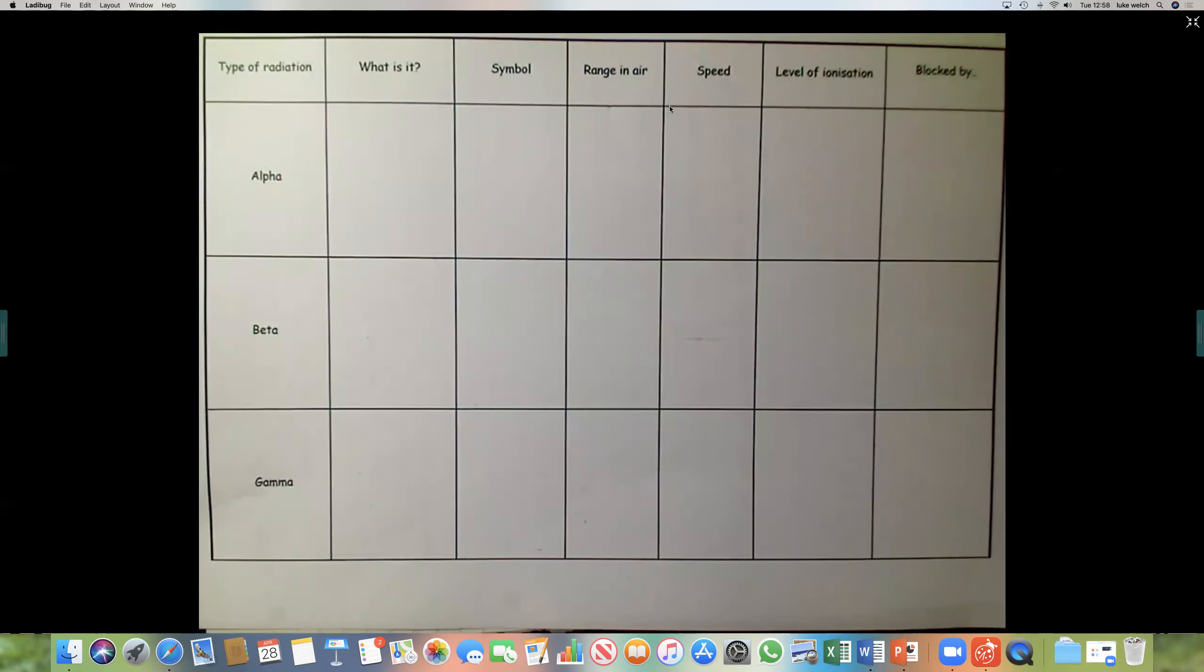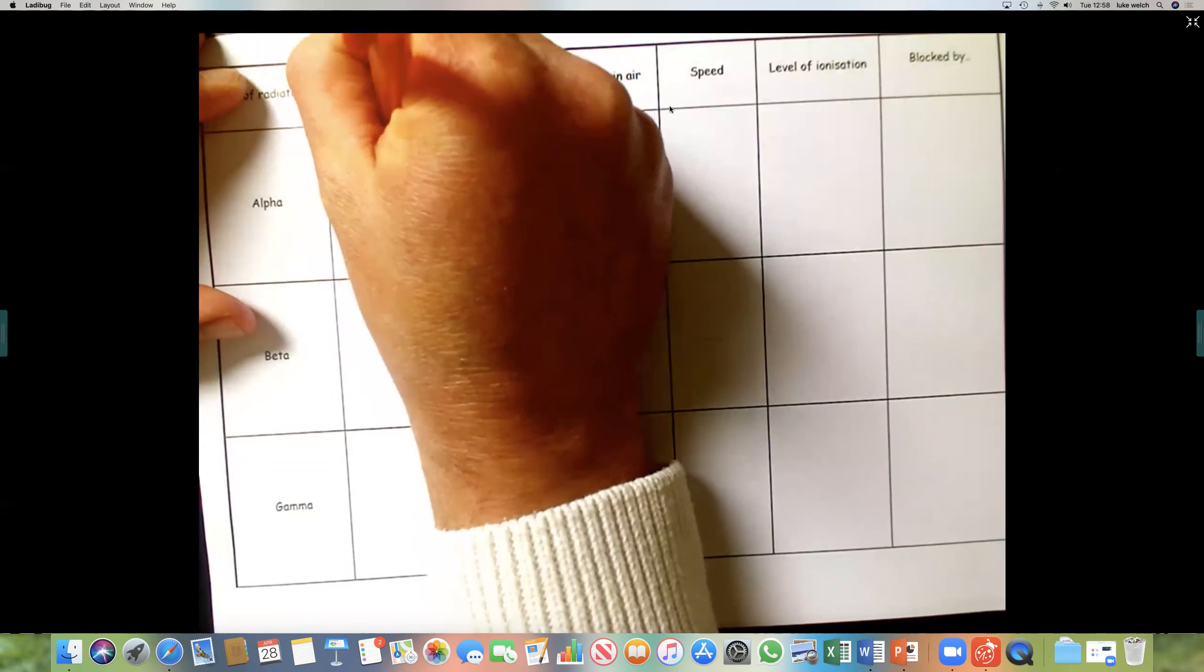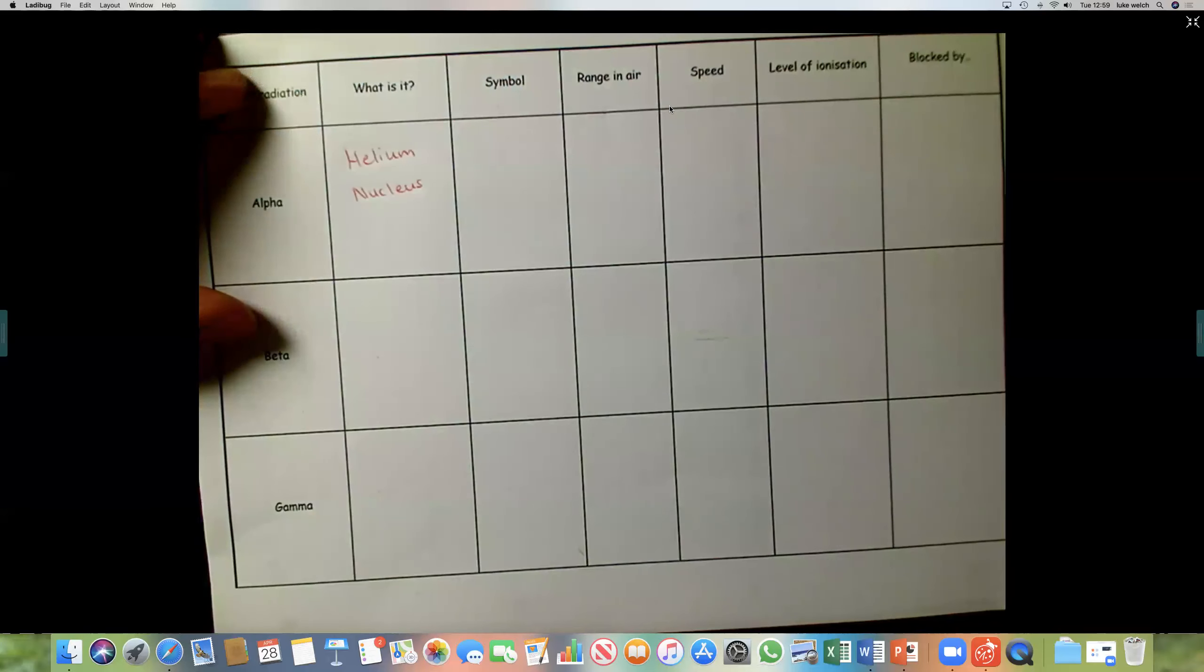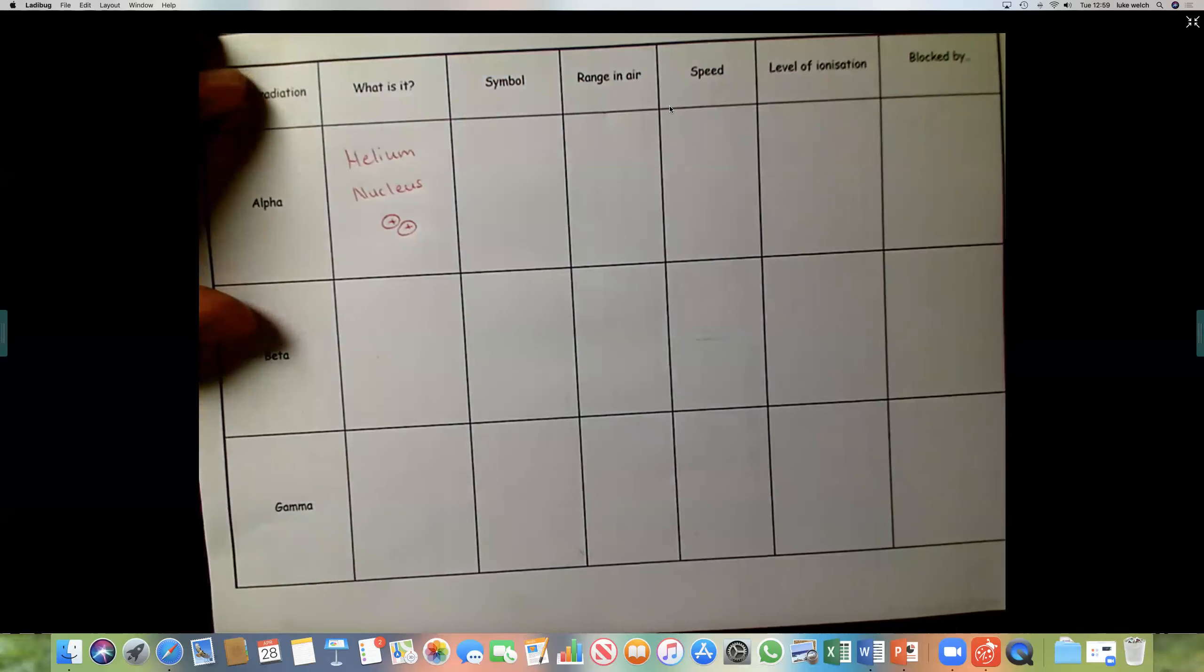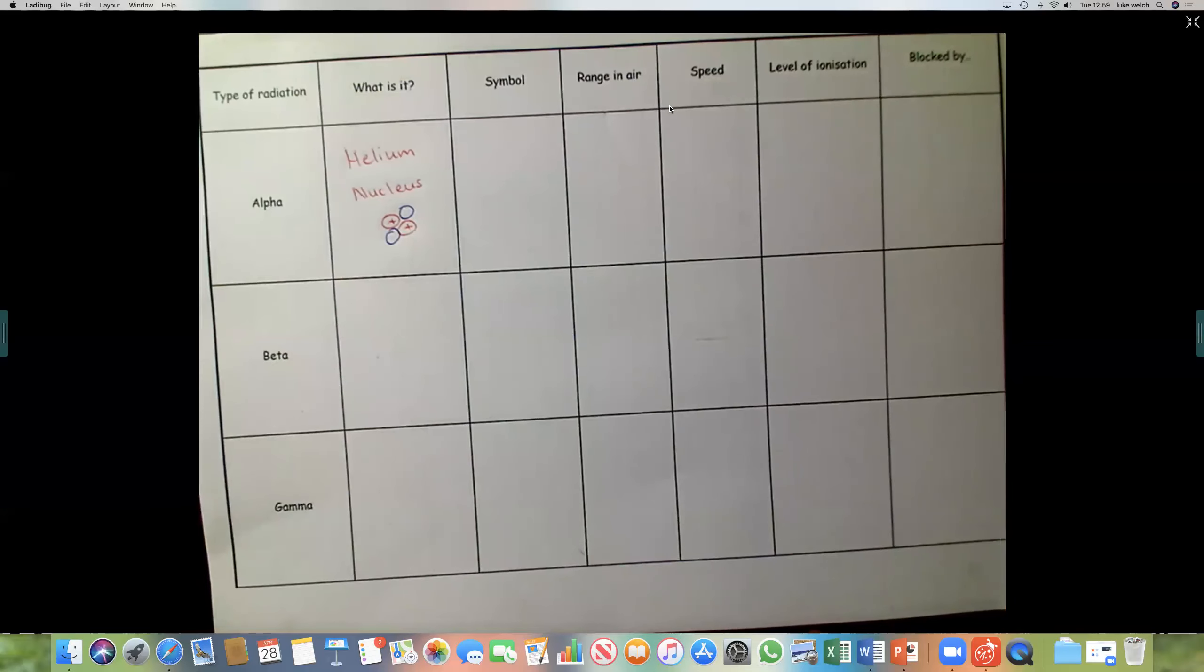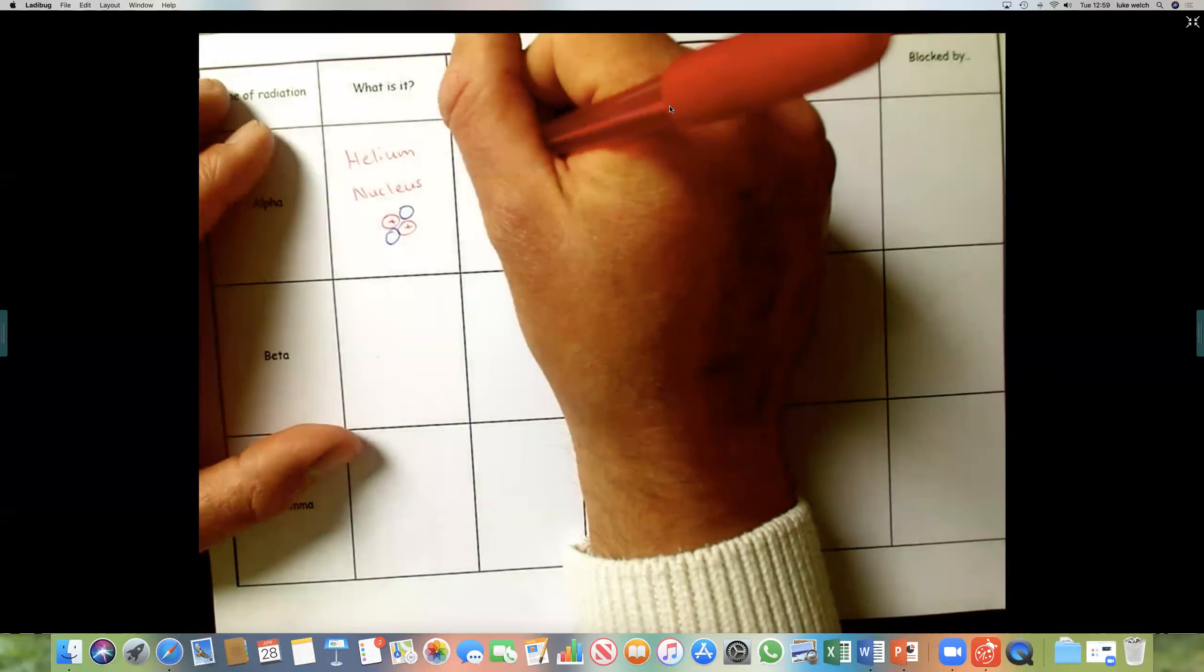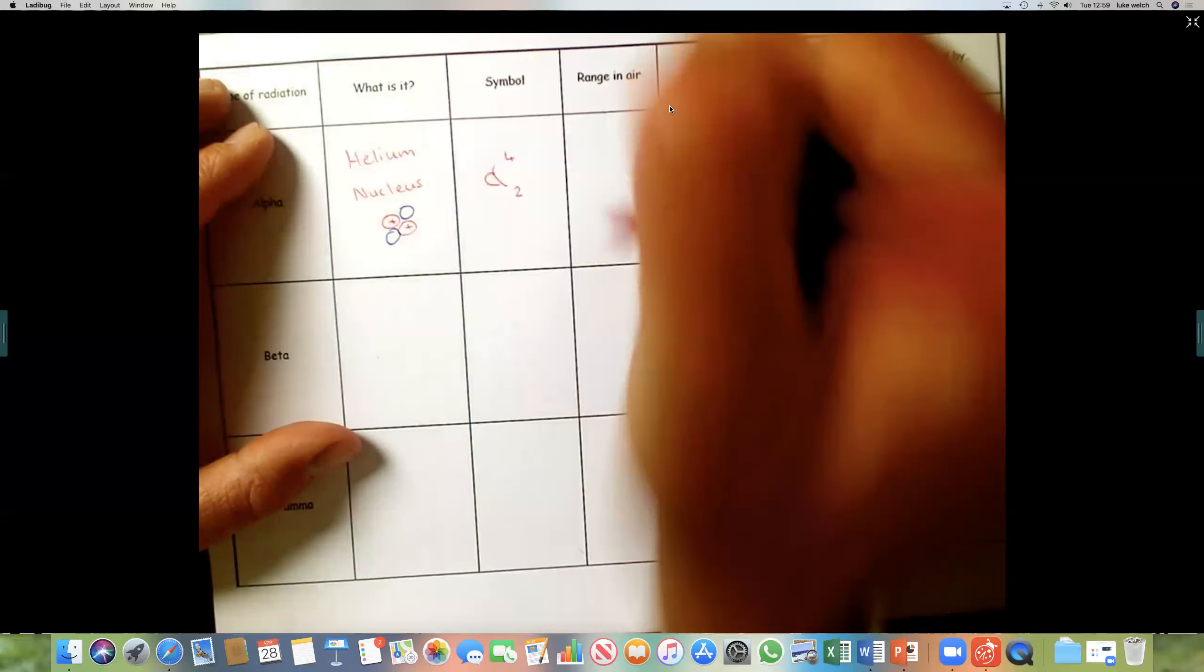So hopefully you've got this in front of you. I'm going to fill this in together. So an alpha particle, what is it? It is a helium nucleus. And to remember, if we were to draw a helium nucleus, it would look like this. Two positive protons, two neutrons. The symbol is an alpha symbol, which looks like this. And then a helium nucleus is ejected. So we've got four and two. And you can check on your periodic table.